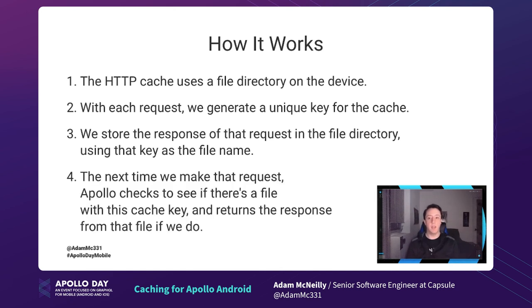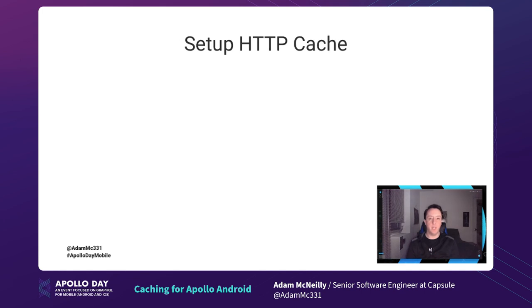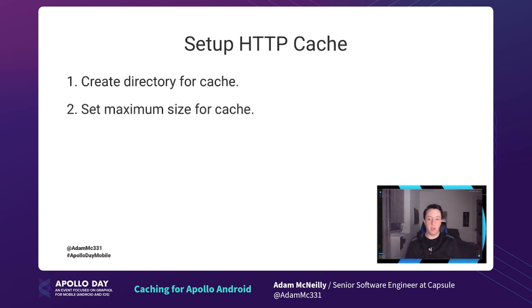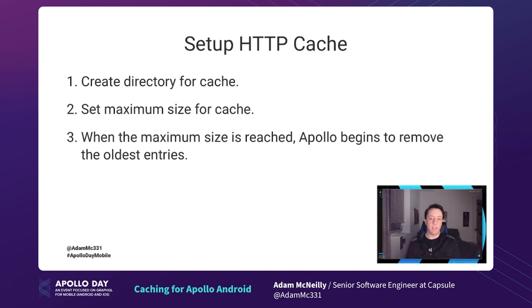The next time we make that request, we'll generate the key again and check to see if a file with this key exists already. If it does, we return that response rather than going to the network again. Those steps follow the setup required to create this HTTP cache. We create the cache directory, we set the maximum size, and when that maximum size is reached, Apollo begins to remove the oldest entries.